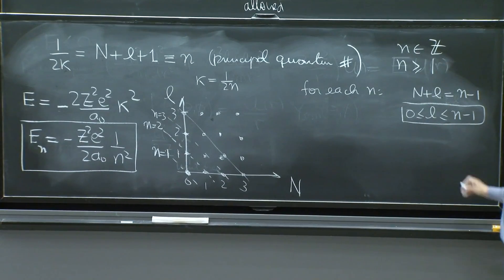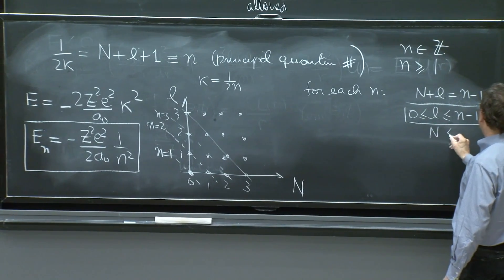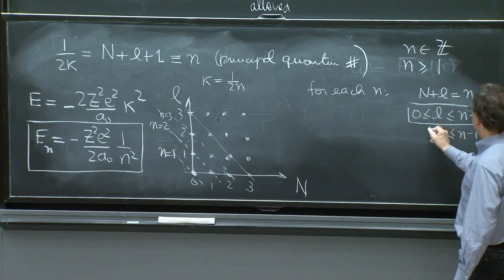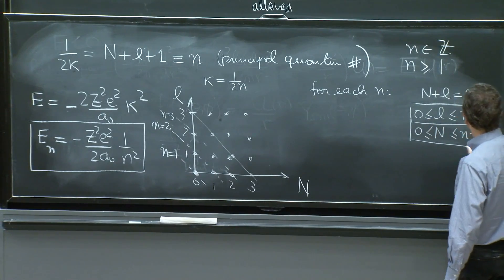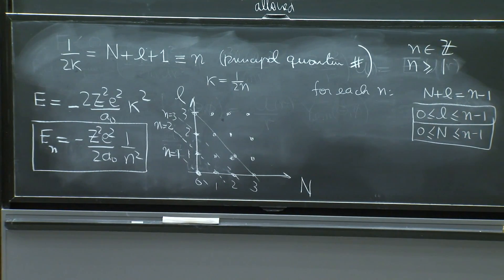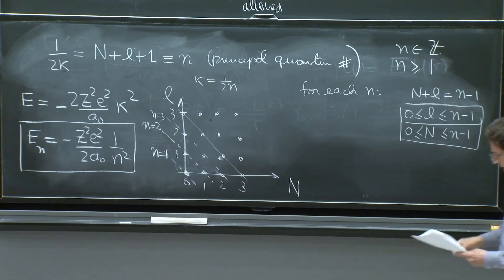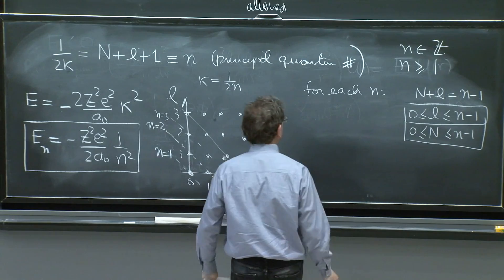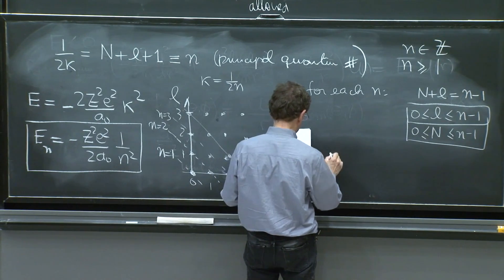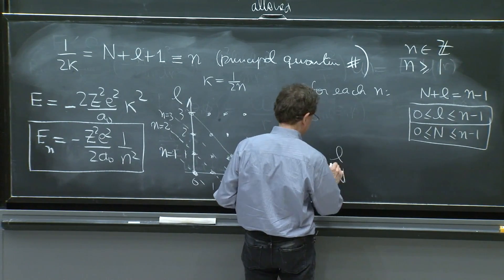And l can never exceed n minus 1. And that's physically quite something that people remember. But also, n cannot exceed n minus 1 or 0. Both are there, limited by these quantities.